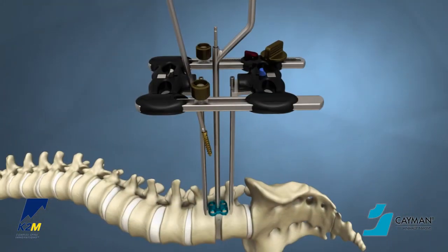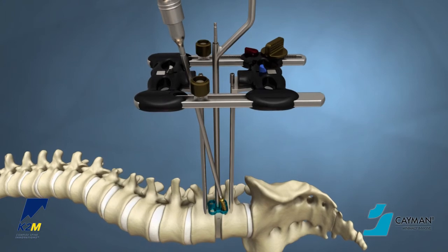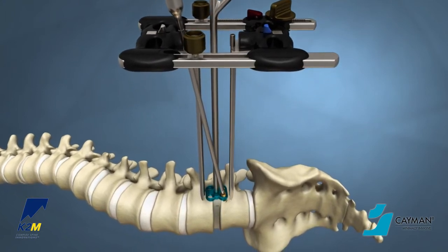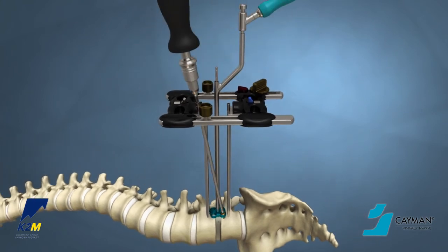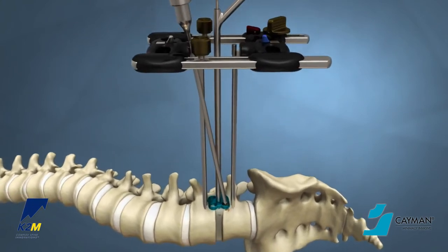Insert the appropriately sized screws into the plate using the size 20 driver attached to the ratcheting Hudson handle. To final lock the screws, use the black torque limiting handle. When the screw head engages on the locking lip of the plate,